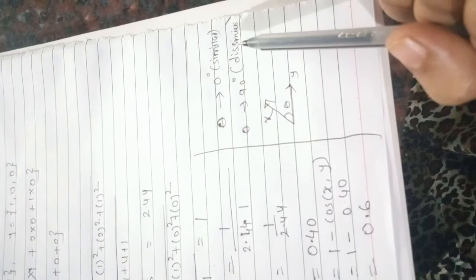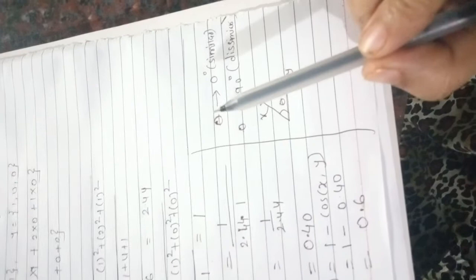Our value is 0.6, so we can say that x and y are quite similar. This is about cosine similarity.